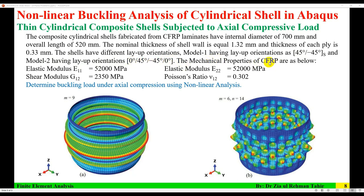The mechanical properties of CFRP are as follows: elastic modulus E11 is 52,000 MPa, elastic modulus E22 is 50,000 MPa, shear moduli G12, G13, and G23 are 2,350 MPa, and Poisson's ratio is 0.302.